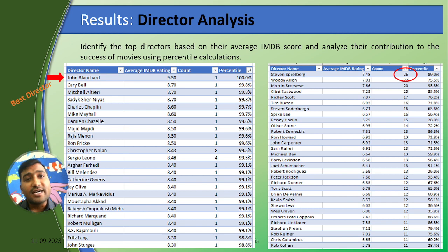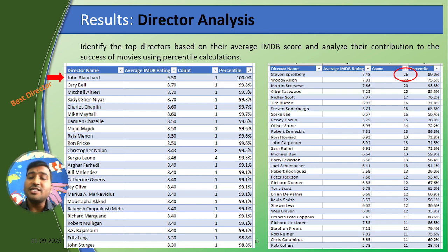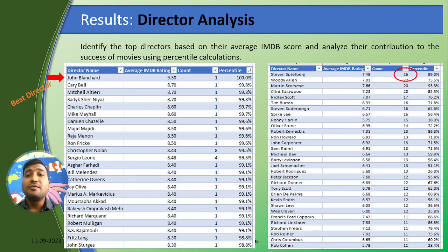Coming to the director analysis, we can see that John Blanchard has achieved the 100th percentile with a rating of 9.50, but he has directed only one movie. On the other side, Steven Spielberg has an average rating of 7.48, but he has directed 26 movies with an 89th percentile rating. We can say that John Blanchard has the highest rating, but Steven Spielberg is more popular with audiences.